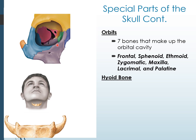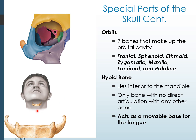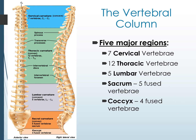The hyoid bone is inferior to the mandible and is the only bone in the body with no direct articulation with any other bone. It anchors the tongue, serving as a movable base for all the tongue muscles. Now we move to the next section of the axial skeleton: the vertebral column. It has five major regions: seven cervical, 12 thoracic, and five lumbar vertebrae, plus the sacrum (five fused vertebrae) and the coccyx or tailbone (four fused vertebrae).